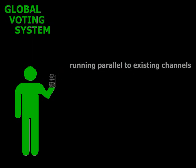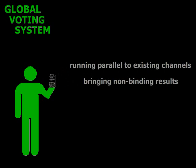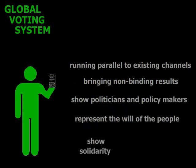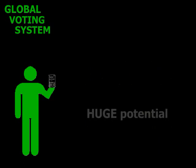This is how the Global Voting System will work — running parallel to existing democratic channels, bringing forth voting results on the issues that people care about. While these results would be non-binding, they would still be a powerful asset to help convince politicians and government planners as to the will of the people. They would know how many people voted and what the general consensus is. These results would also let individuals know how many others feel as they do, and the power of solidarity is an excellent tool to affect change.